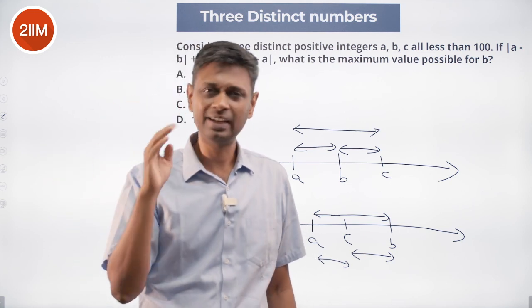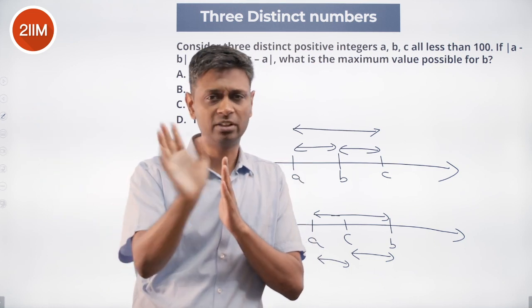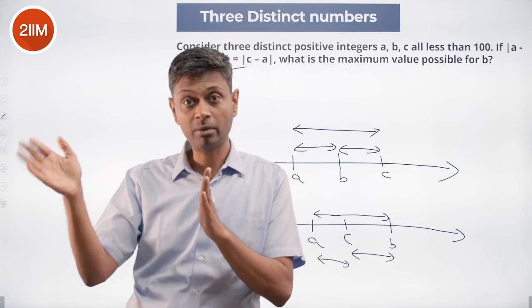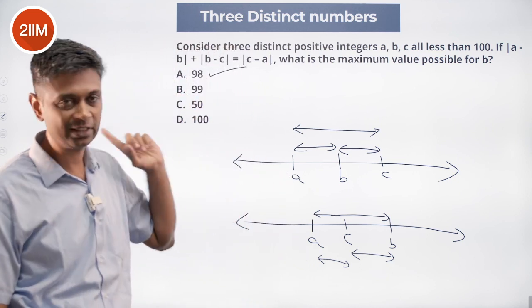It could be 99, 98, and any other number. B being 98, c being 99, a being 3—that will work. A being 99, b being 98, c being 5—that will work. And so the maximum value b could take is 98.